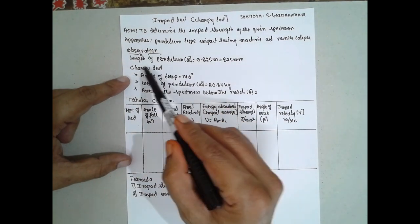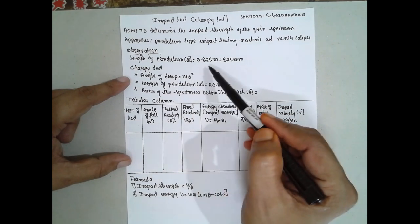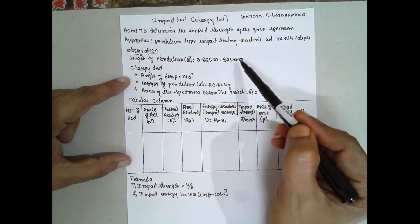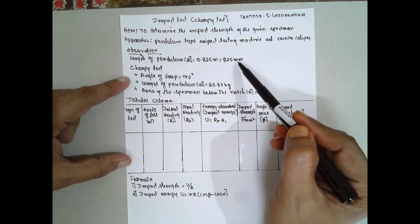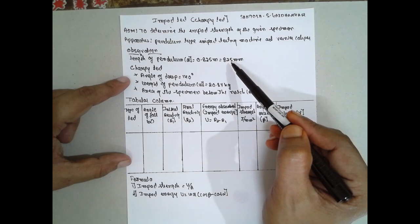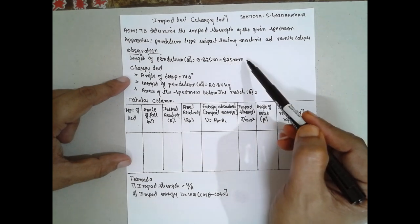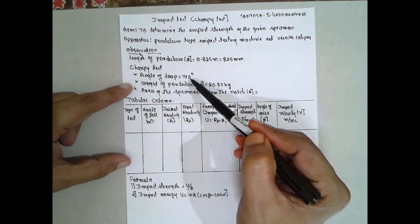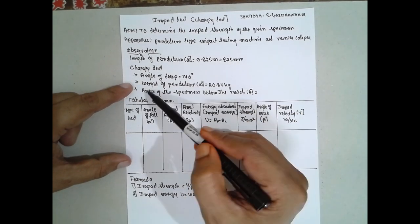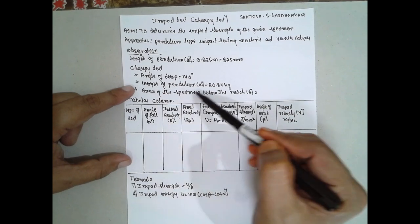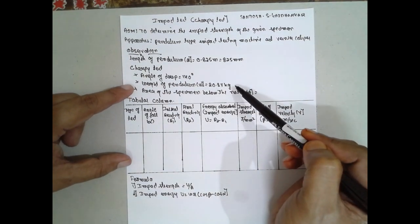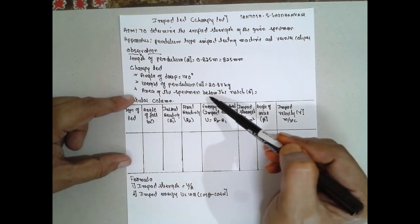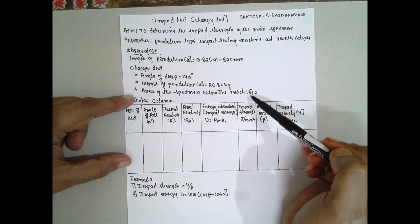The observations: the length of the pendulum is 0.825 meters, or 825 mm. The angle of drop is 140 degrees. The weight of the pendulum is 20.87 kg. Next is the area of the specimen below the notch.